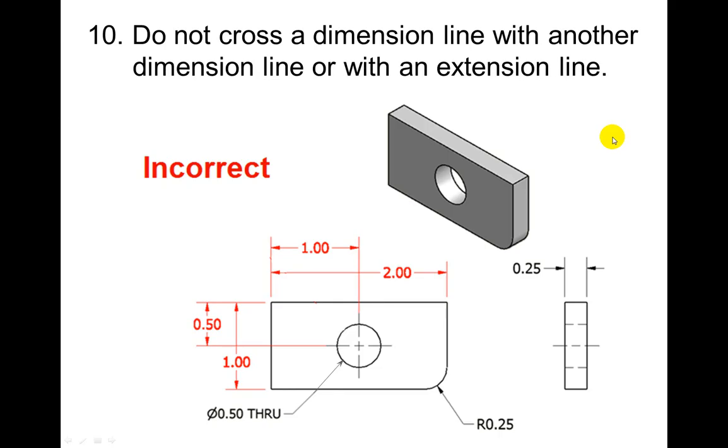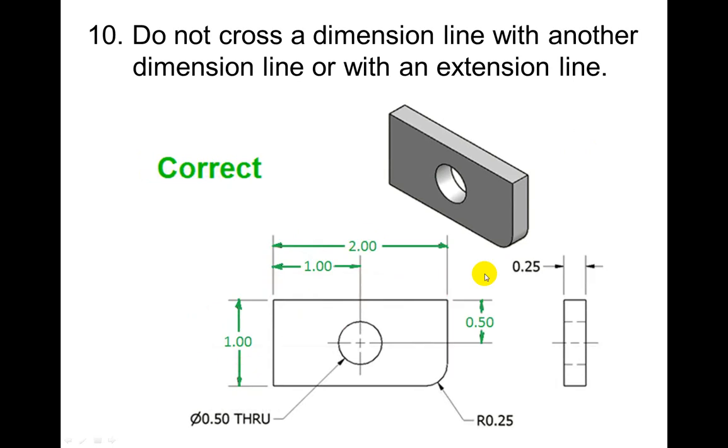So now we have a new drawing for you. Do not cross a dimension line with another dimension line or with an extension line. We've kind of already seen this worded in a different way, to keep the lower dimensions closer to the object so that they don't cross. So this would be the correct way. Notice that we're trying to keep most of these on the inside. We do have this one on the outside because we have a radius here.